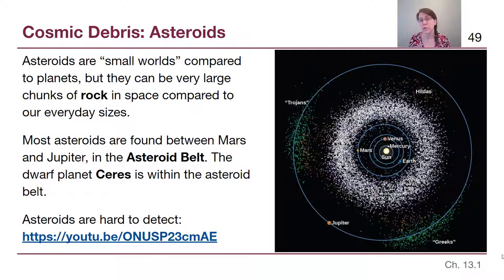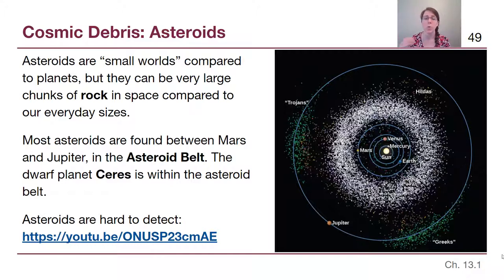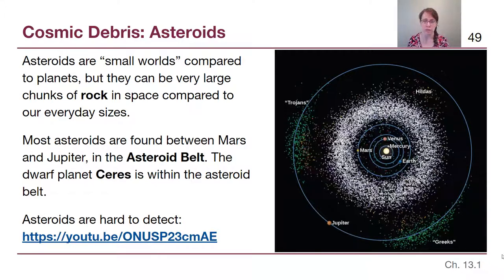The dwarf planet Ceres is inside the asteroid belt. This picture includes terms like Greeks, Trojans, and Hildas — we aren't getting into the details of those. They aren't different in the material they're made of; they differ in the way they orbit the Sun. You're welcome to read about it in Chapter 13.